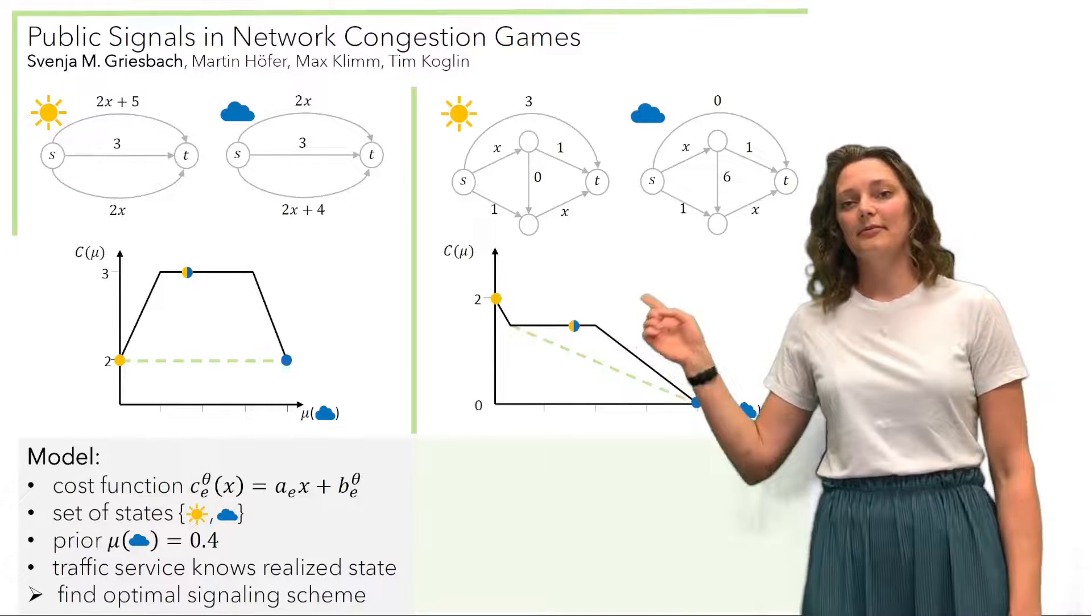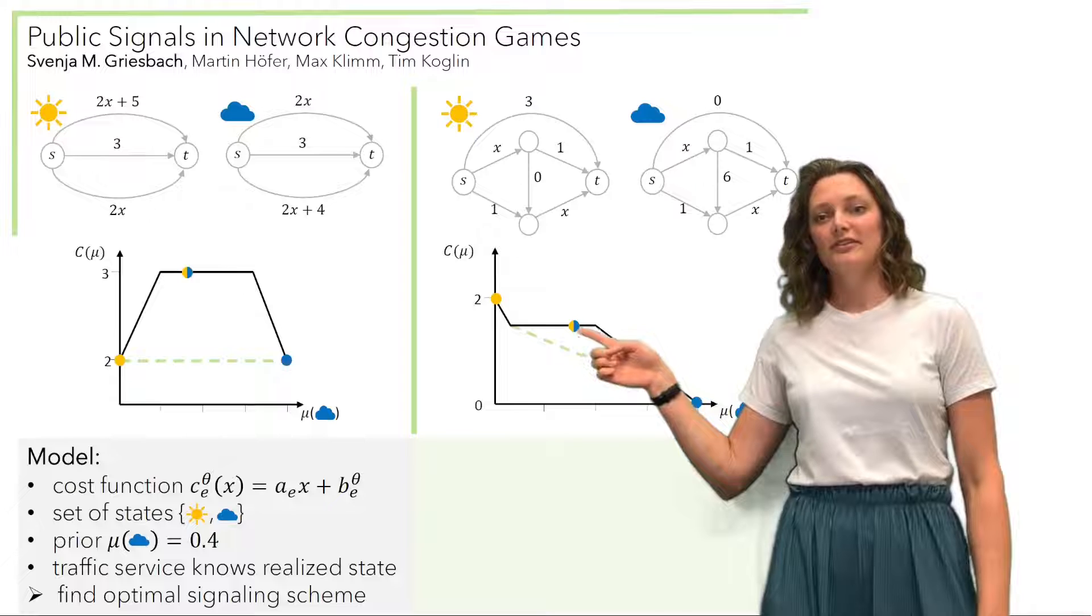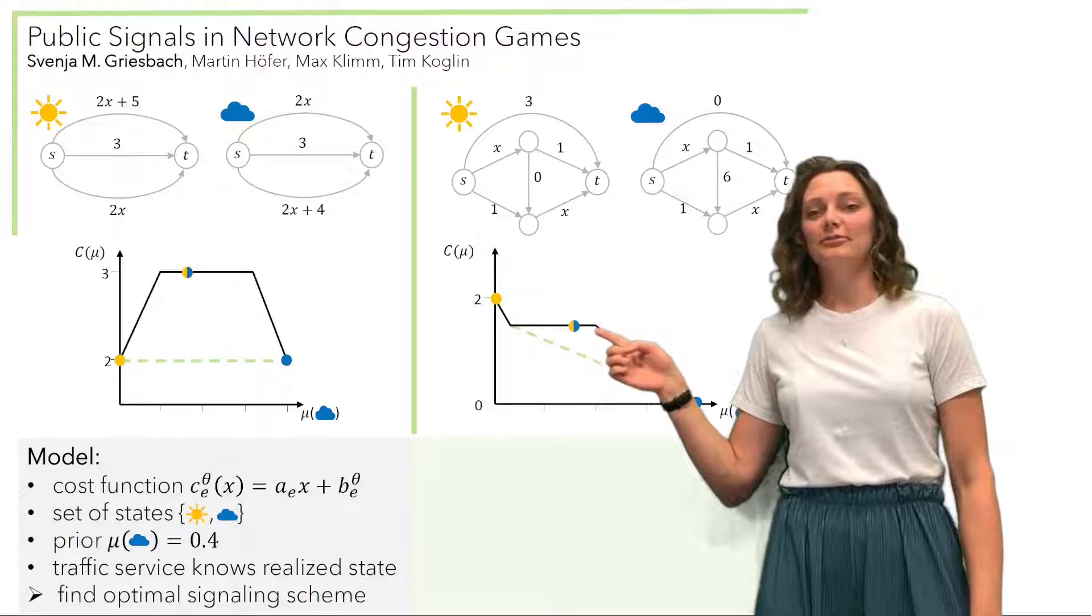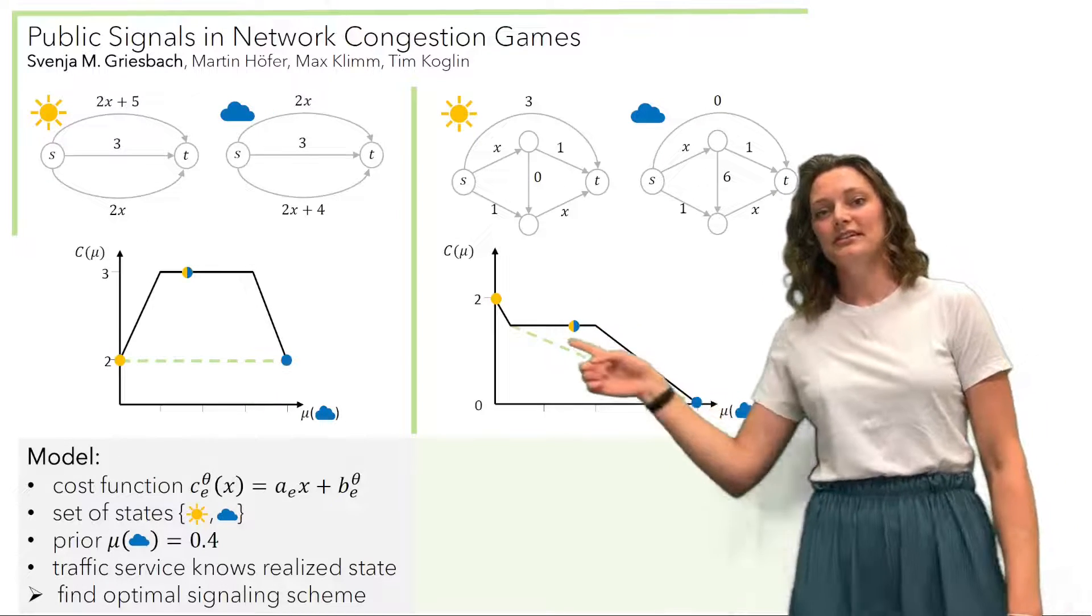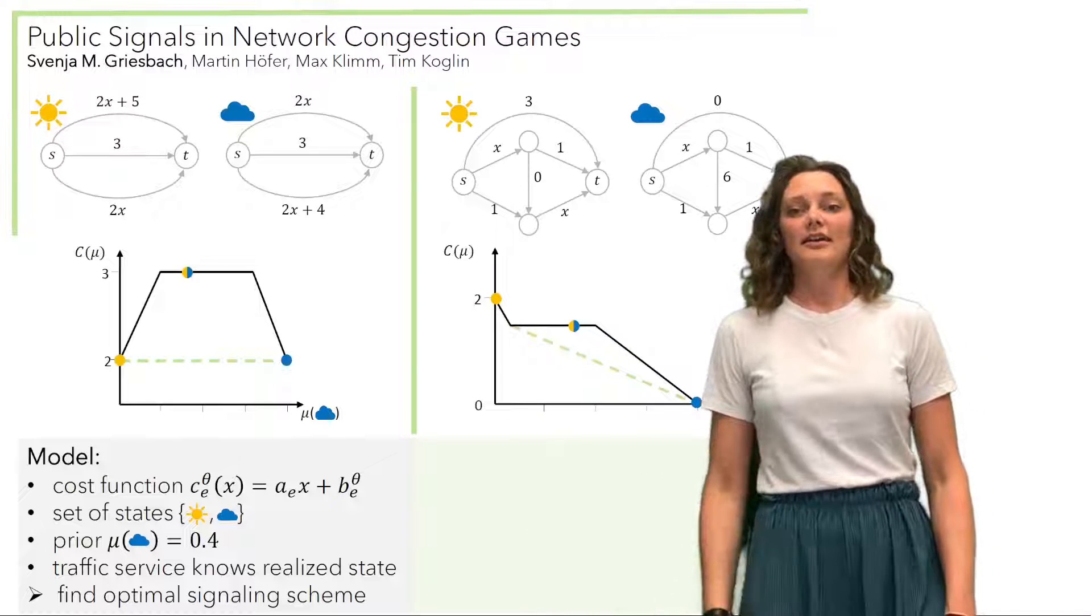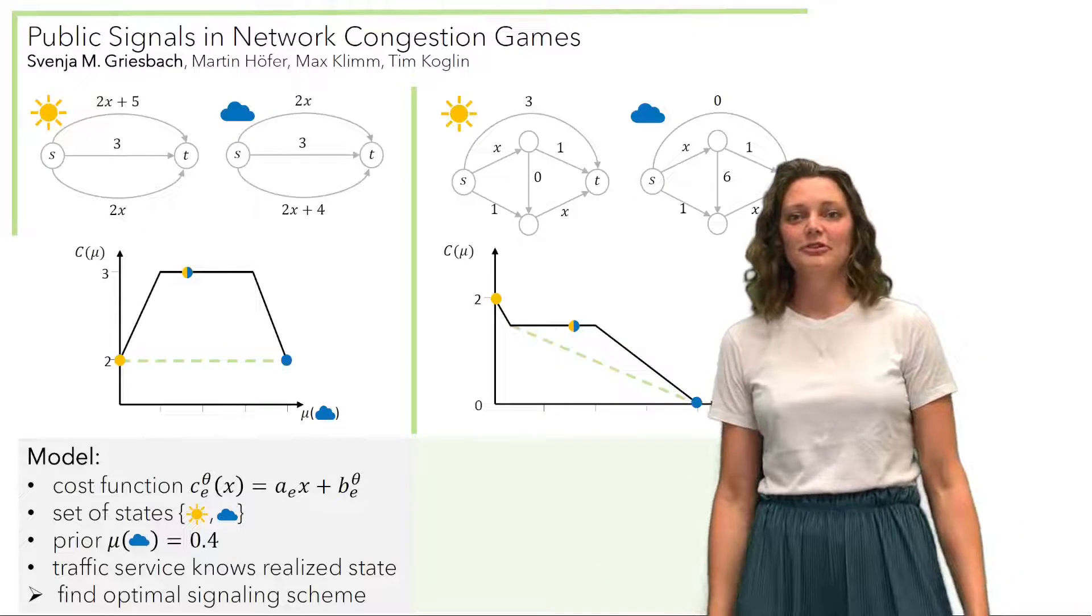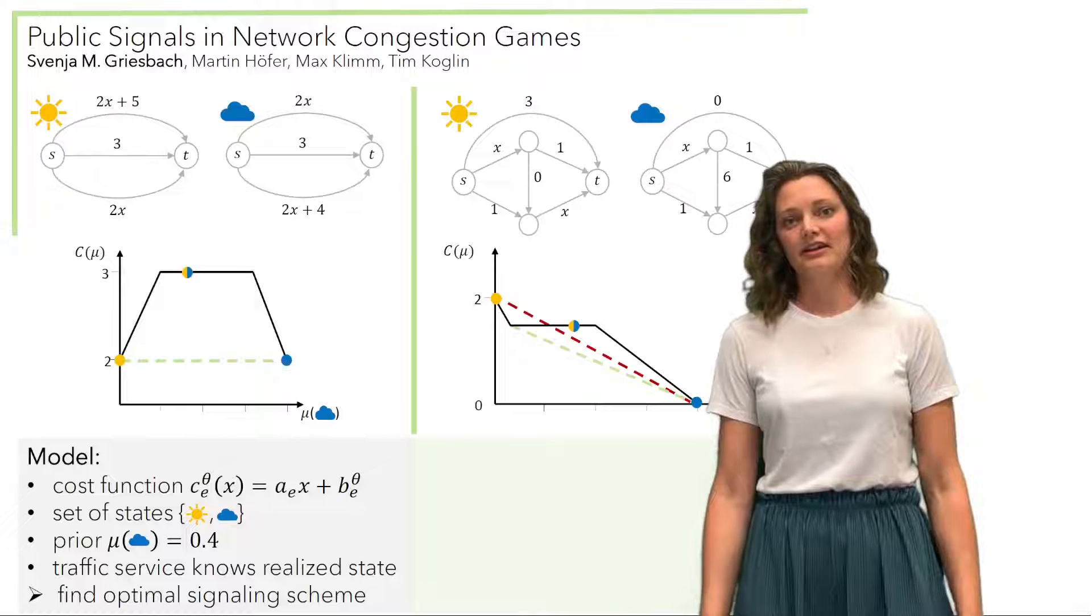And we can see a convex decomposition of this prior would actually be best if we use this point here and this point up here. And this is obviously not full information, because full information would be the red line, which is strictly more expensive.